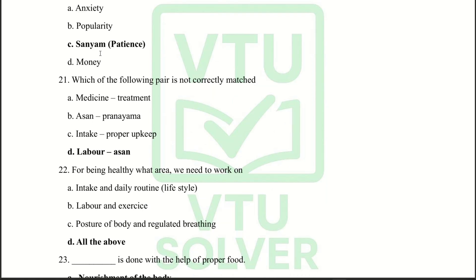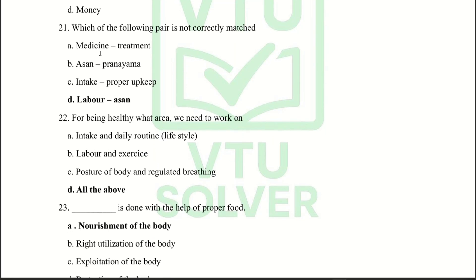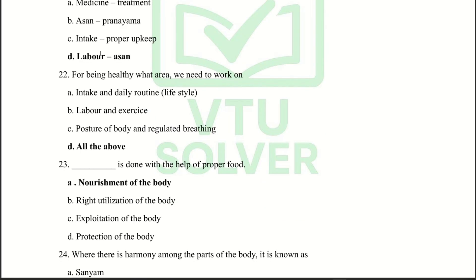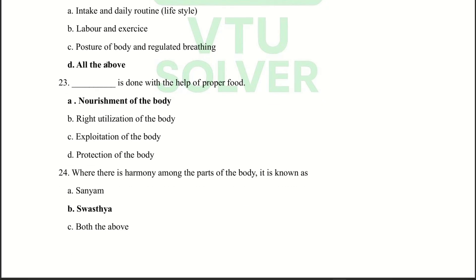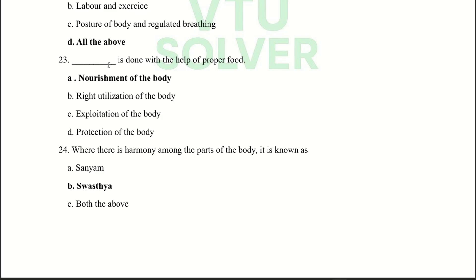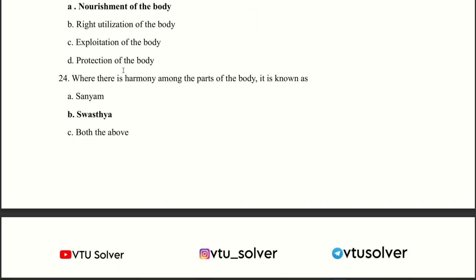Next question: Which of the following pair is not correctly matched? Answer: Labor — Asson. Next question: For being healthy, what area do we need to work on? Answer: All of the above. Dash is done with the help of proper food — Nourishment of the body. Next question: Where there is harmony among the parts of the body, it is known as Swasthiya.